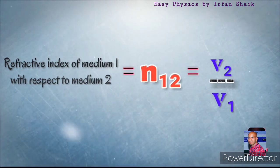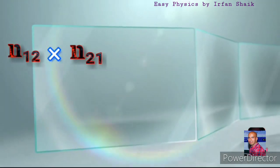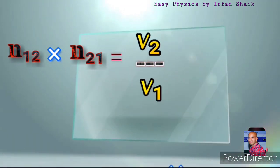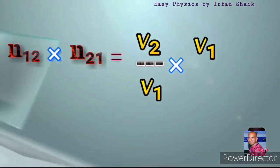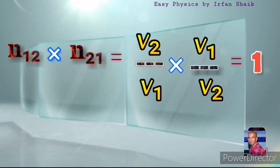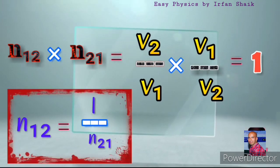If we take the product of n12 and n21, that is V2 by V1 times V1 by V2, it equals 1. By this, we can conclude that n12 equals 1 by n21.